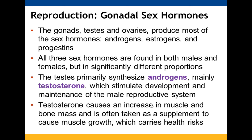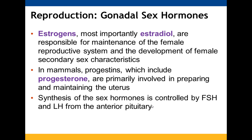For reproduction, the gonadal sex hormones are produced mainly by the testes and ovaries, though the adrenal gland can also make some. The three types — androgens, estrogens, and progestins — are found in both males and females but in significantly different proportions. The testes synthesize androgens, mainly testosterone, which maintains and develops the male reproductive system and increases muscle and bone mass. Estradiol plays a key role in maintaining the female reproductive system and developing female secondary sex characteristics. Progesterone is a progestin that prepares and maintains the uterus for carrying an embryo. Synthesis of these hormones is controlled by FSH and LH from the anterior pituitary.